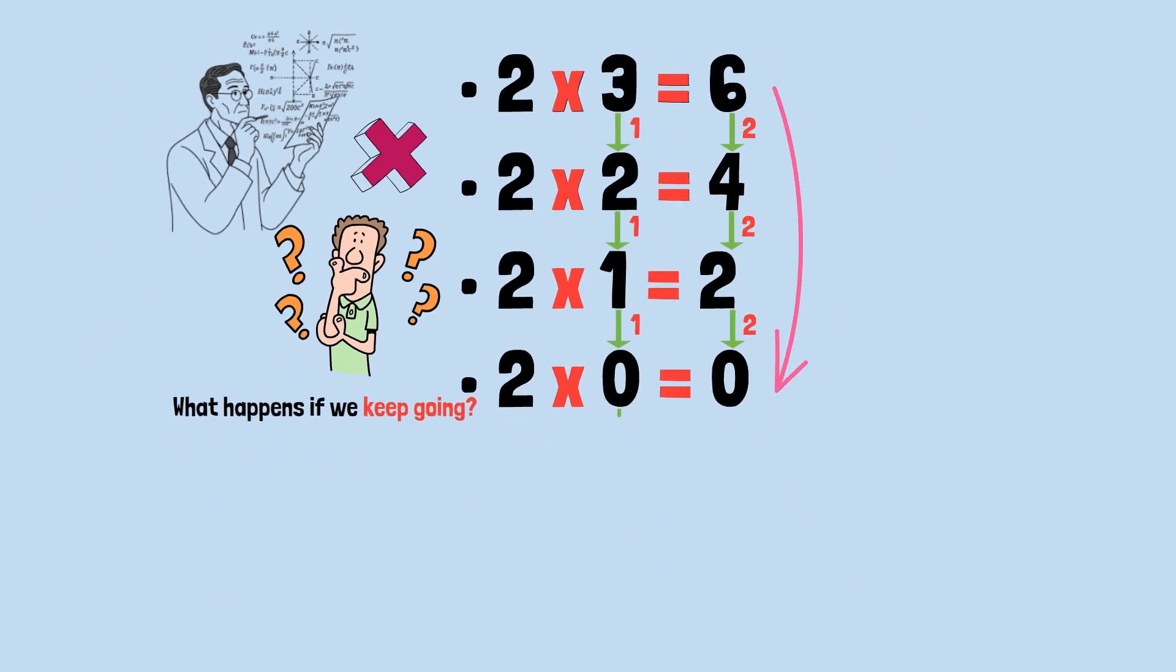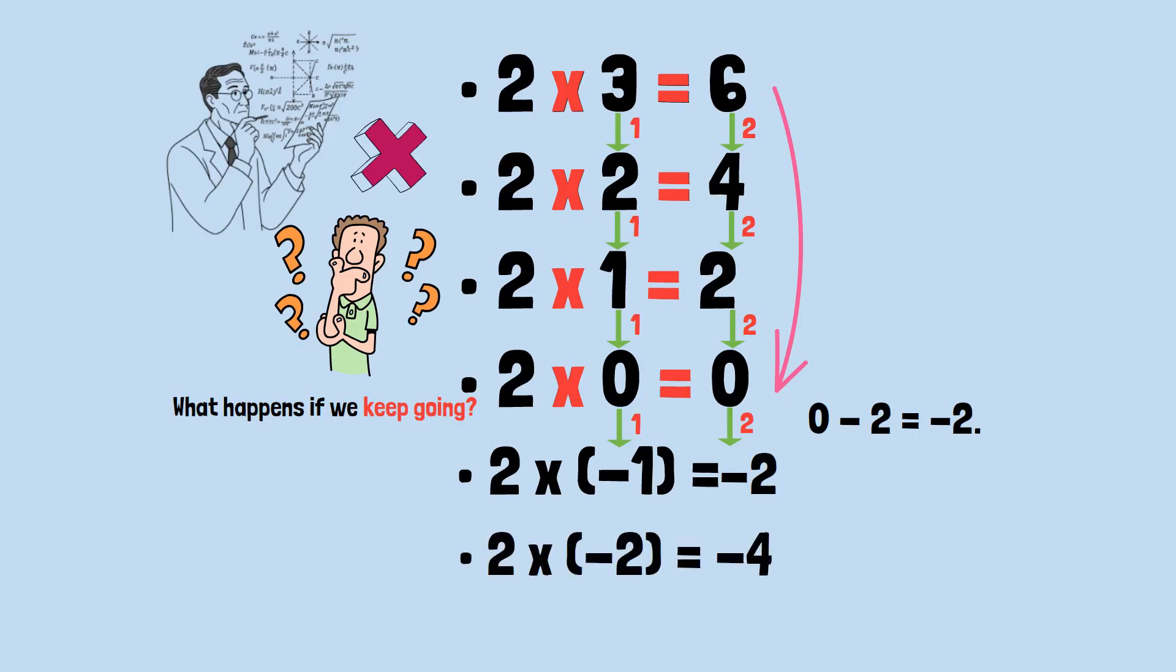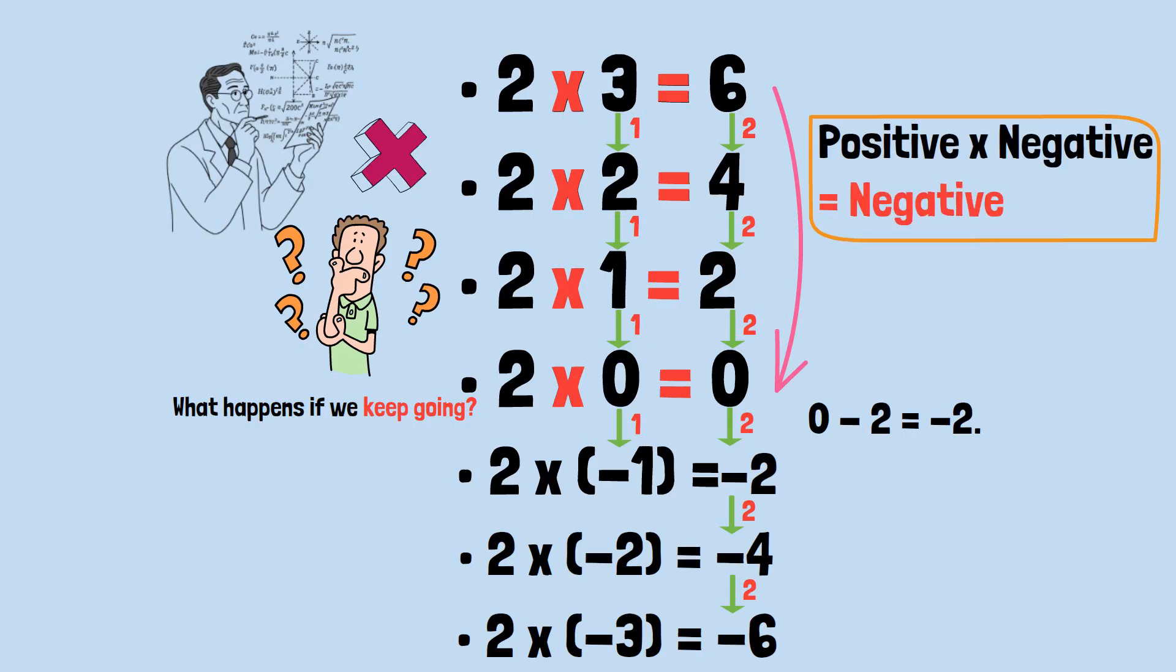What happens if we keep going? If we decrease the second number by 1 again, we get 2 × (-1) equals. Following our pattern, the product should decrease by 2, giving us 0 - 2, which equals -2. So, 2 × (-1) = -2. Let's continue. 2 × (-2) = -4, decreased by 2 again. 2 × (-3) = -6, decreased by 2 again. This gives us the familiar rule. A positive times a negative equals a negative. Nothing shocking here. This aligns with our intuition.